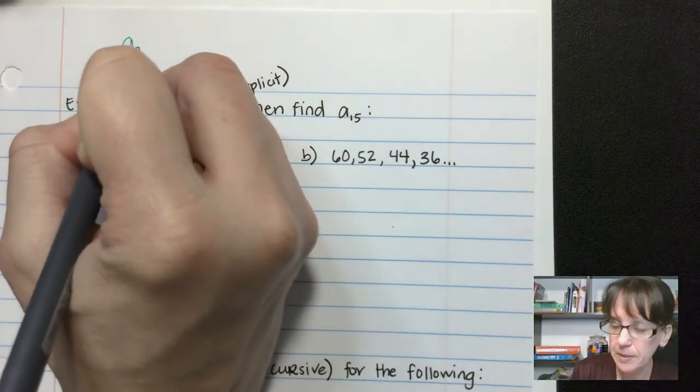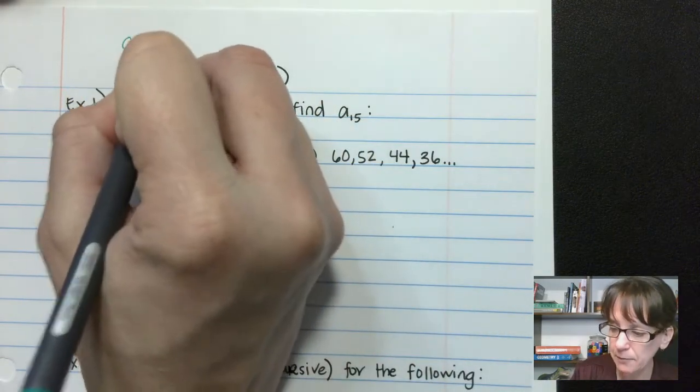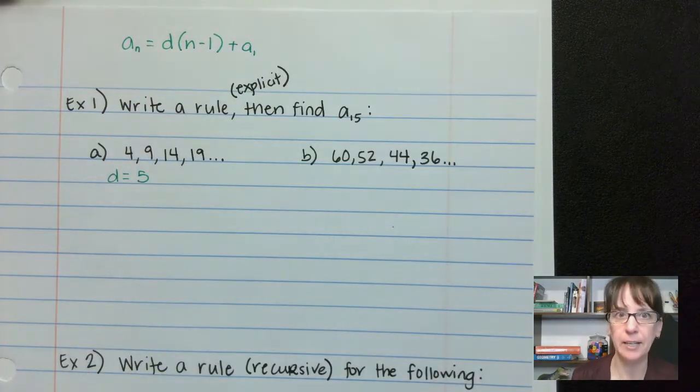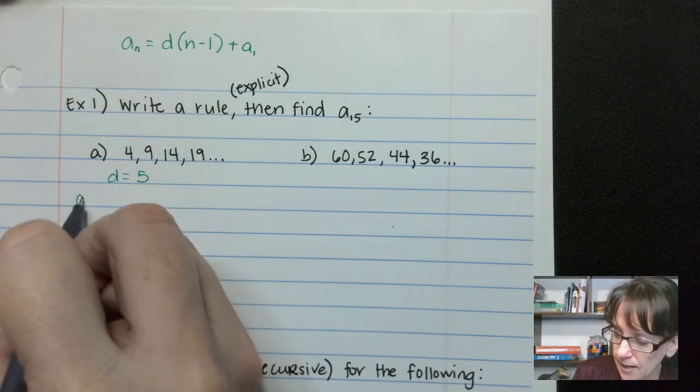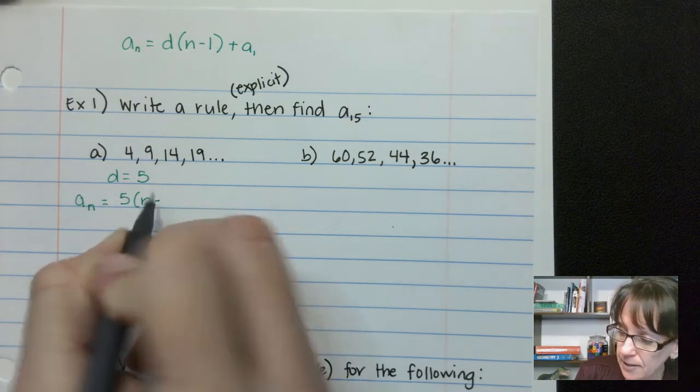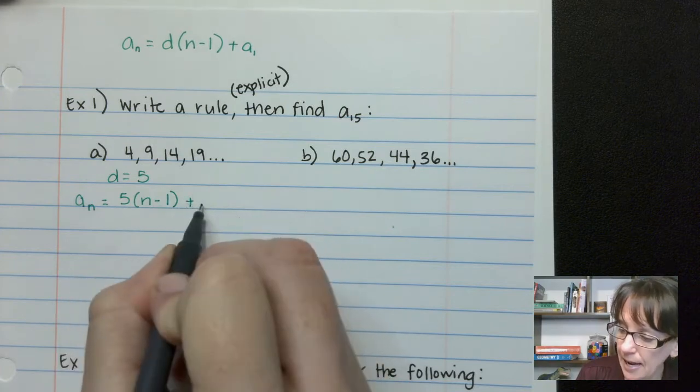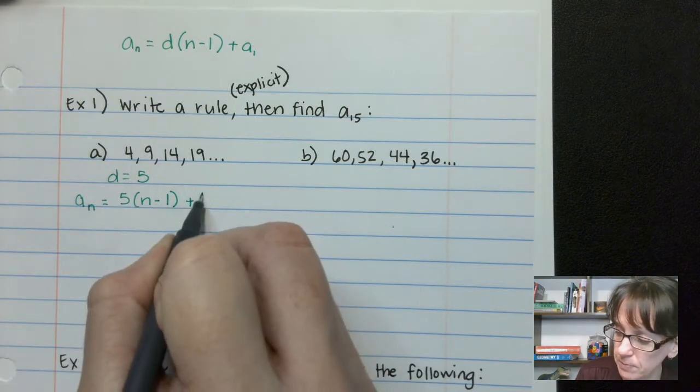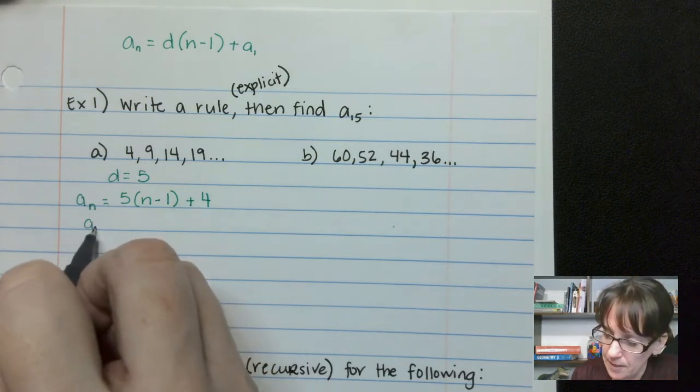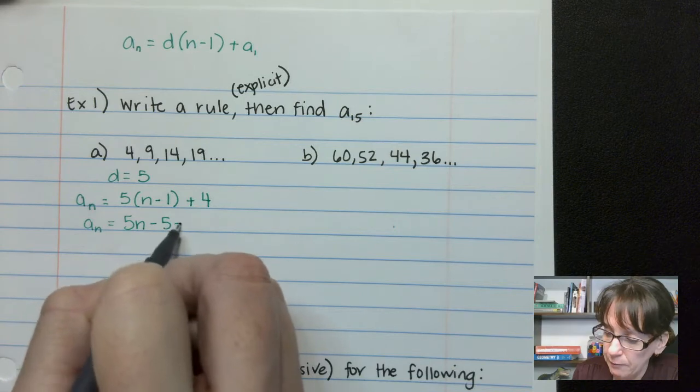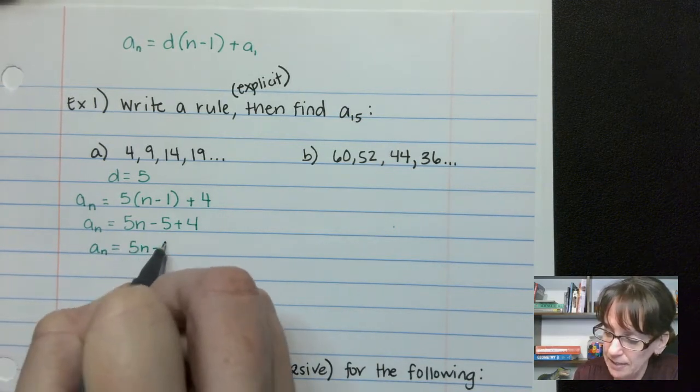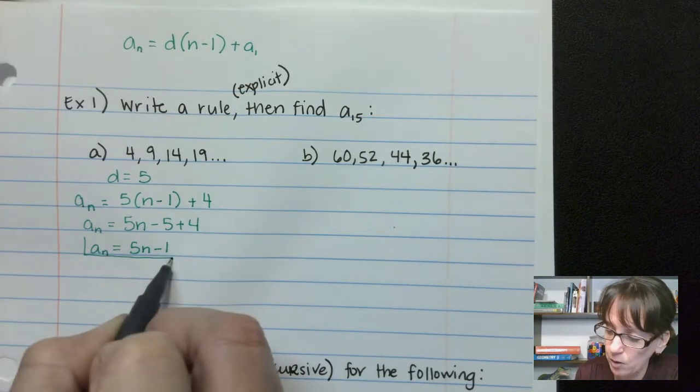Now our rule again, don't forget, is we have a_n—I'll write it right up here so we can see—a_n equals difference times (n minus 1) plus a_1. So we have a_n equals 5(n minus 1) plus a_1, which is 4, because that's what happens. That's the answer in position 4. So then we say a_n equals 5n minus 5 plus 4. Combine our like terms here. We get a_n equals 5n minus 1. There is our rule.